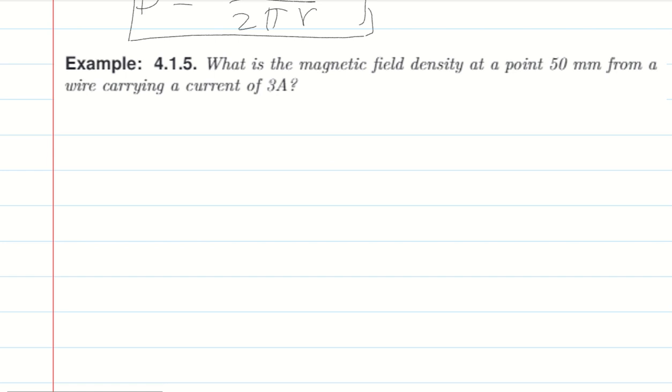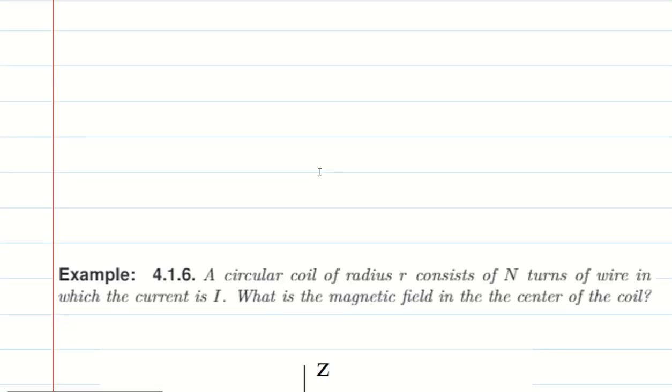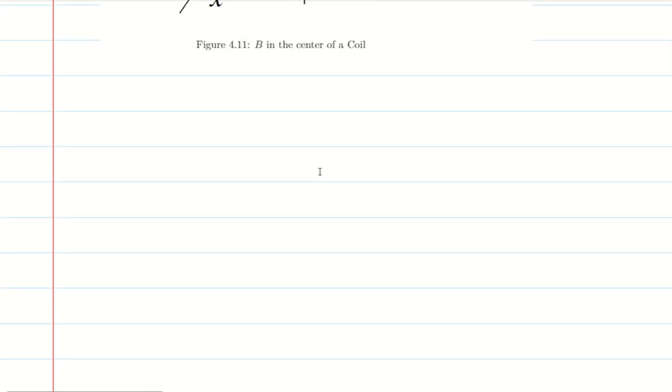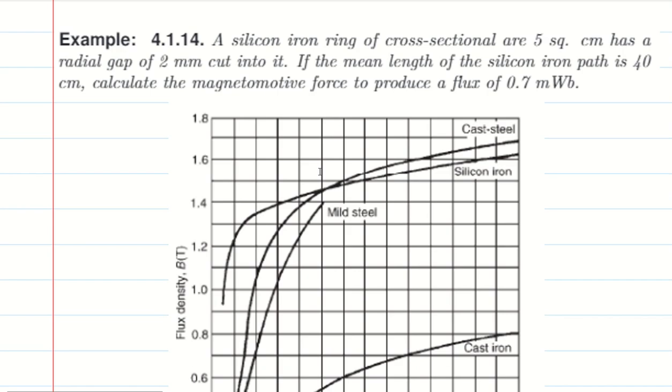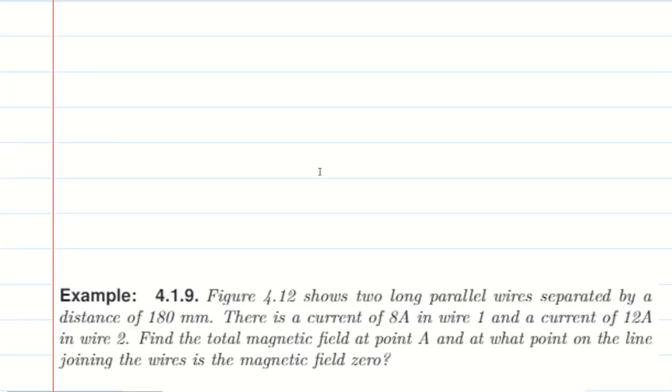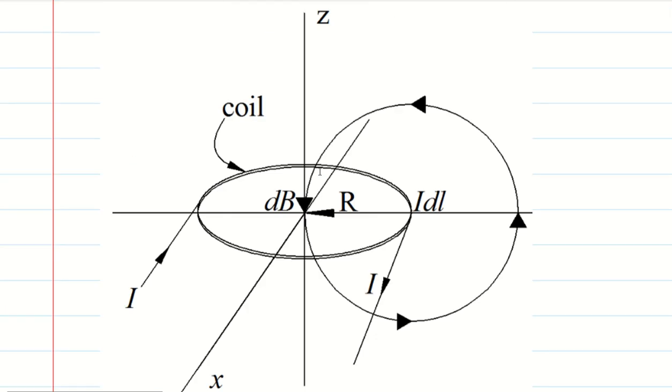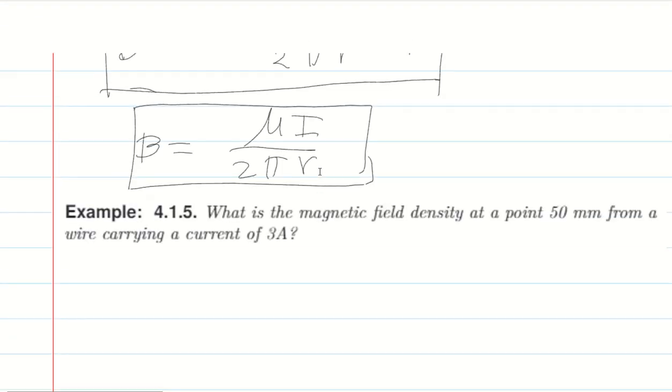There are more examples to be covered before moving to Part 2 of Chapter 4 in the next video, where we will discuss magnetically coupled circuits.